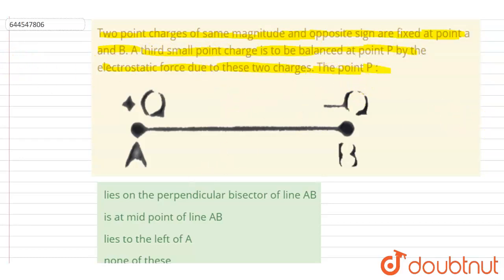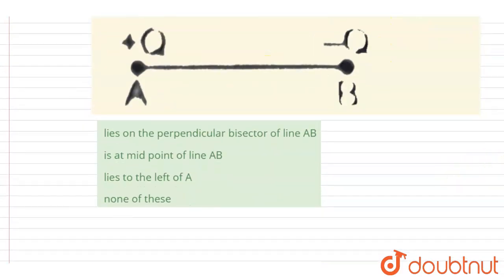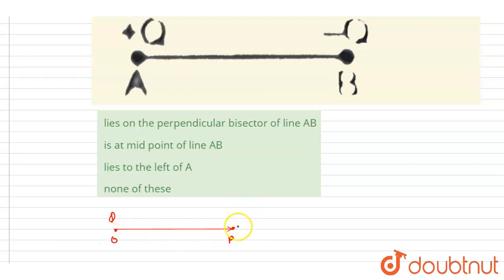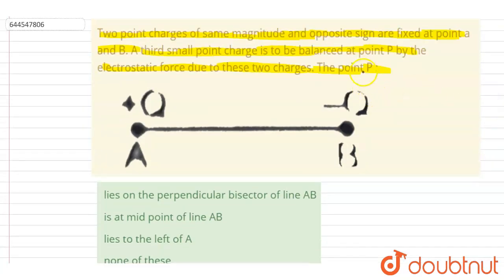Because of a charge q at a distance r, the electric field will be kq/r². If the charge is positive, the field will be directed away, and if the charge is negative, it will be directed toward. So if we want the electric field to be zero at any point P...